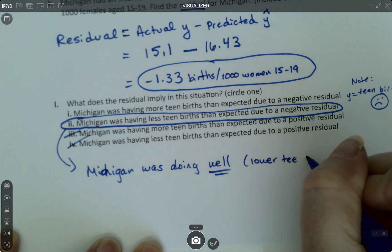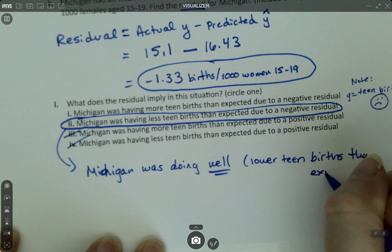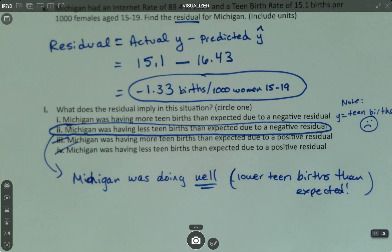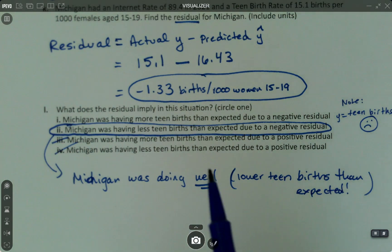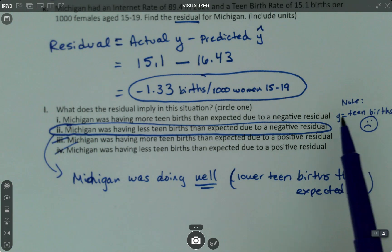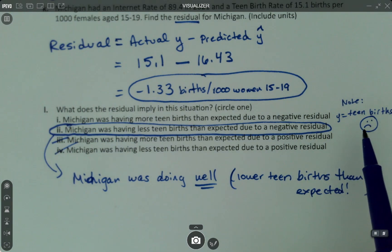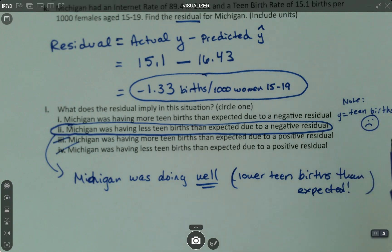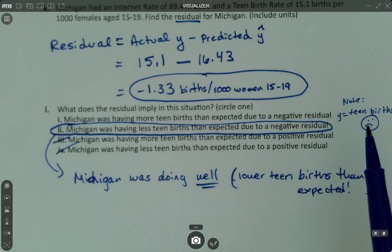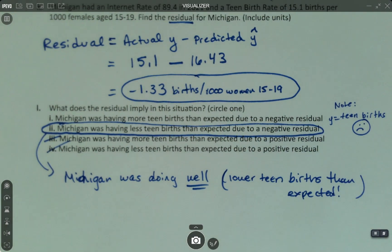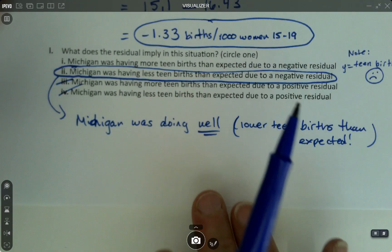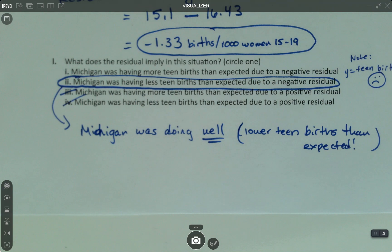Lower teen births than expected — that's doing well. Doing well or doing poorly is a judgment call based on the context for what your y variable is. If the y variable is a bad thing, as in this case, then a negative residual is good because you've got less of the bad thing. If the y variable is a good thing, then a negative residual is bad because you're not getting enough of the good thing. You always want to think about the context and say, we were expecting this but we got this — that was lower than expected, and that's good, because teen births isn't something that a state particularly wants. I hope that helps you with chapter four and helps you make more sense of it all.